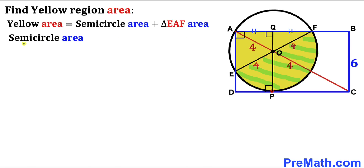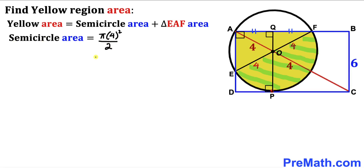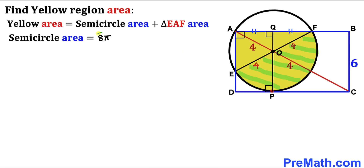Let's calculate the area of the semicircle whose radius is 4. Recalling the area of a circle formula: Area = π R². The area of this semicircle is π times 4 squared divided by 2, which gives us 16π divided by 2, so the area of the semicircle turns out to be 8π square units.